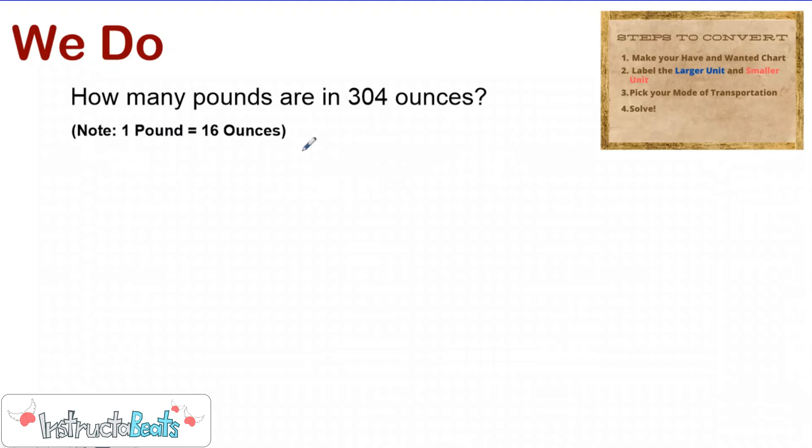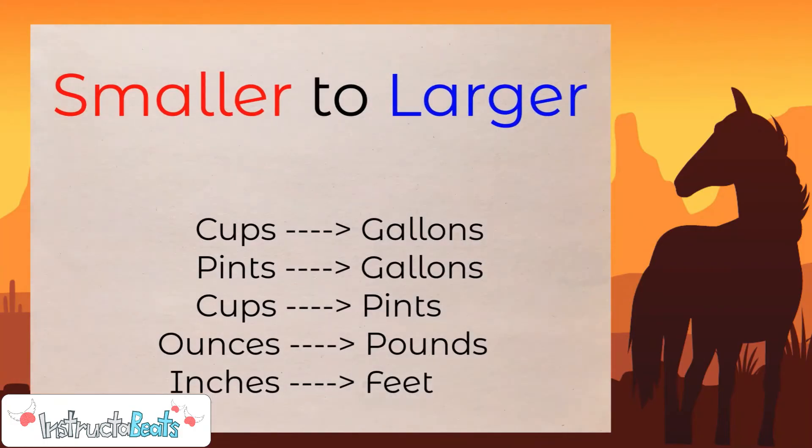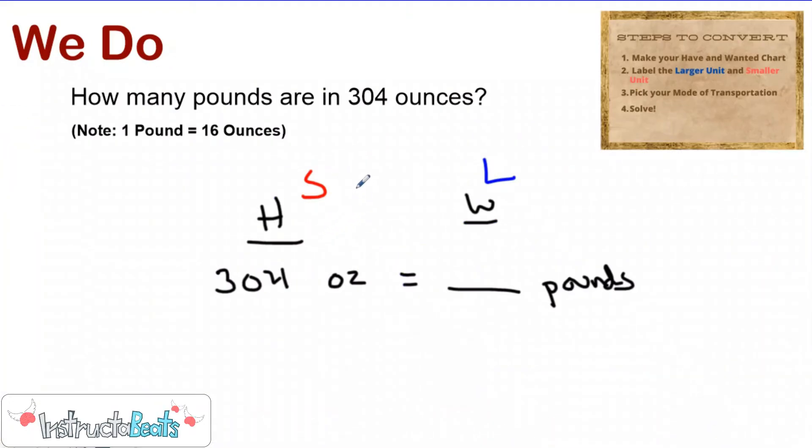So this is just the information we're going to use to convert in a second. So here we have for this one, 304 ounces and I'm going to go ahead and use OZ for ounces and we want to turn that into pounds. You might see LBS for pounds or they might just write pounds. Next, we want to label the larger and smaller unit. So one pound is bigger than one ounce. So my pounds, I will label my larger unit, which means my ounces would be my smaller unit. And again, I labeled this up here because now I can see I'm starting with my smaller to larger, which means we have to saddle up.